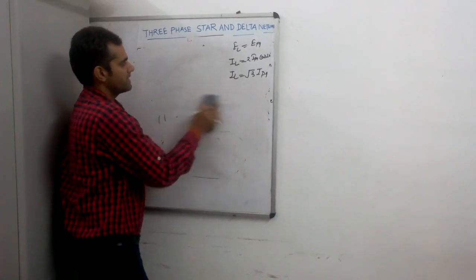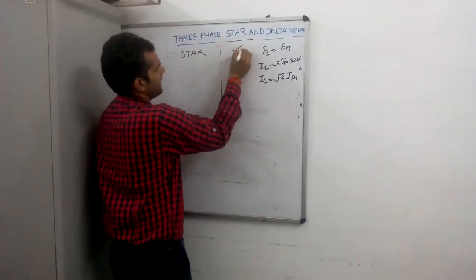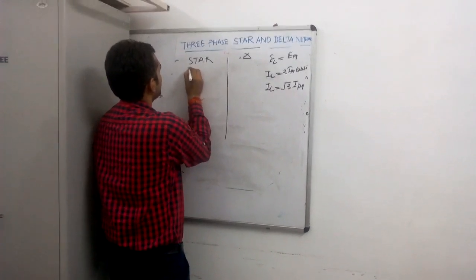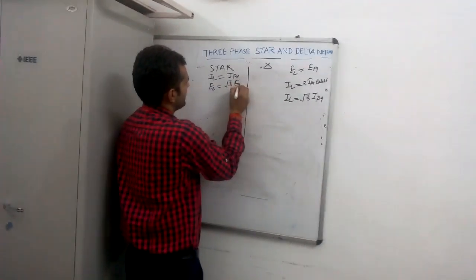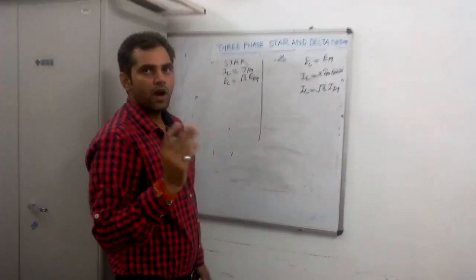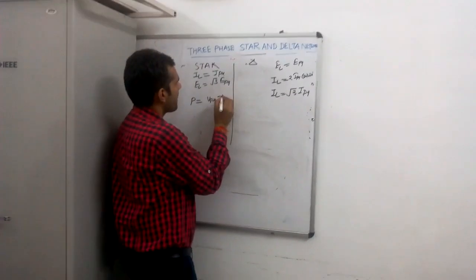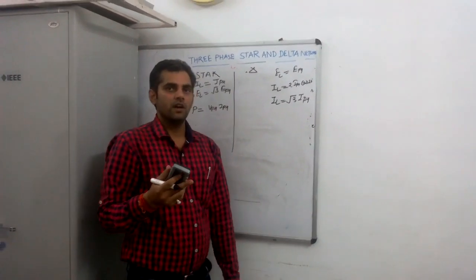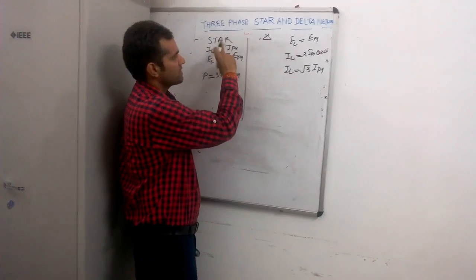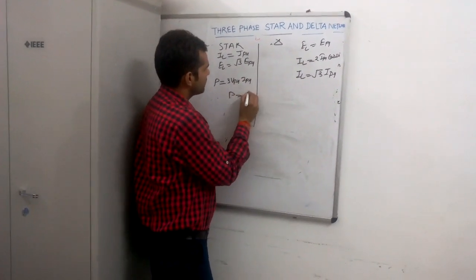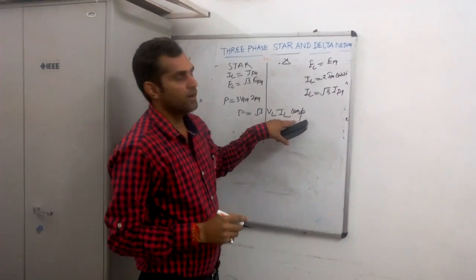Let us conclude the key points. For star connection: line current equals phase current, and line voltage equals root 3 times phase voltage. The power per phase is VPH × IPH, and for all three phases, expressed in line parameters, power P equals root 3 times VL times IL times cos phi, where cos phi accounts for the inductive load power factor.